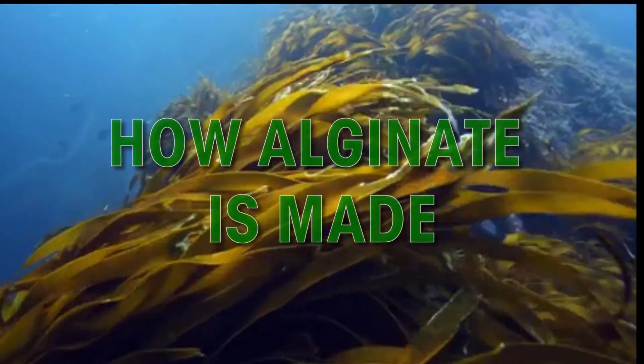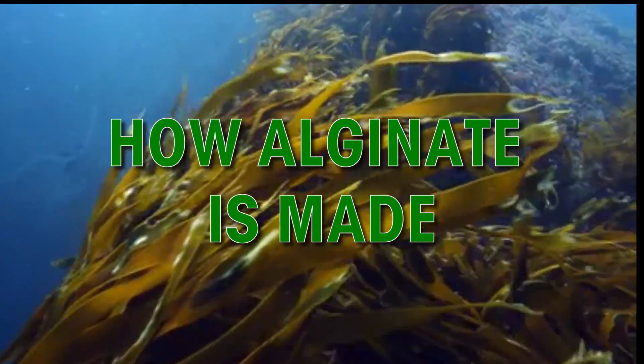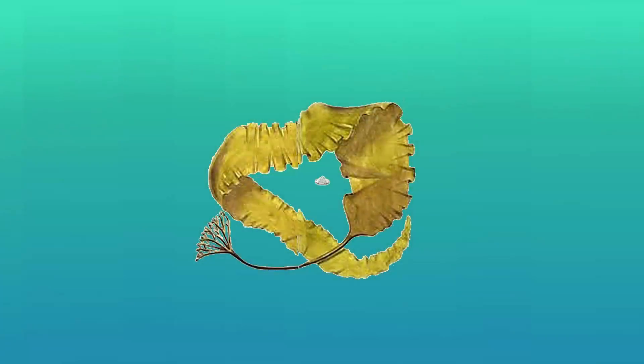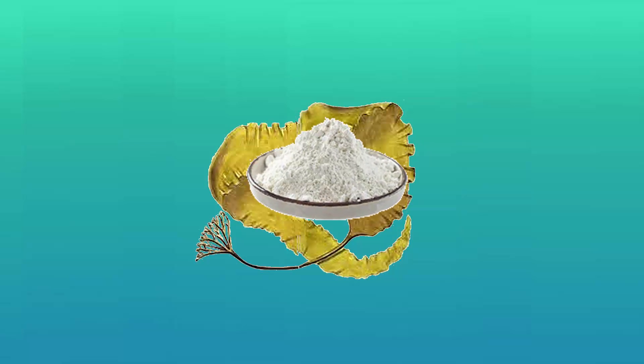How Alginate is Made. Alginate is an important raw material made from refined seaweed which is used in a number of industries, such as